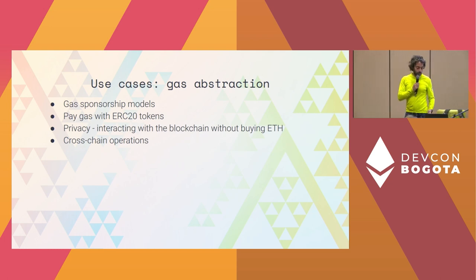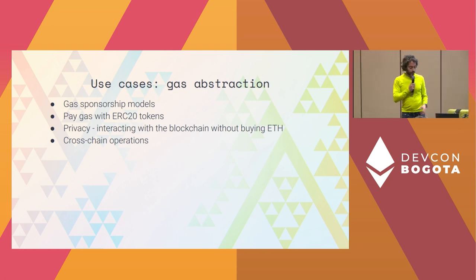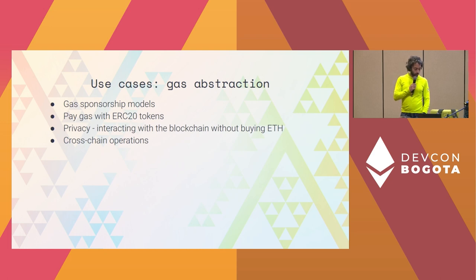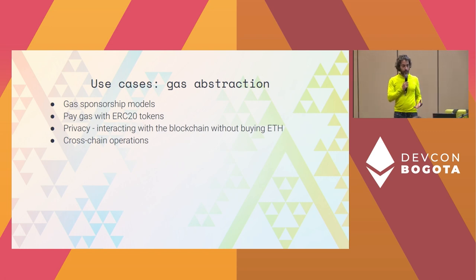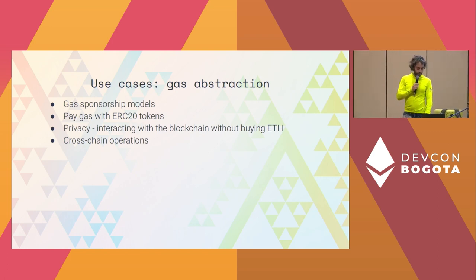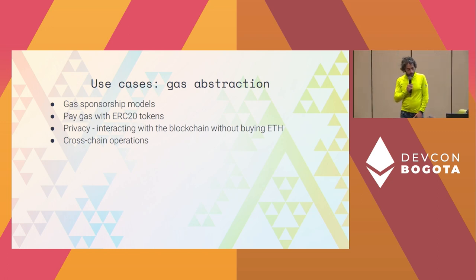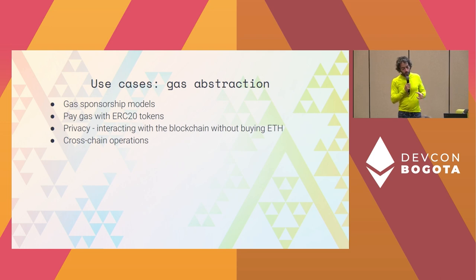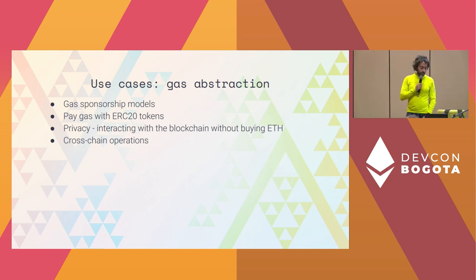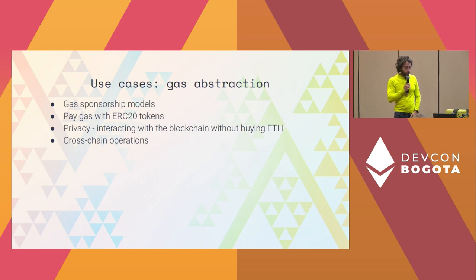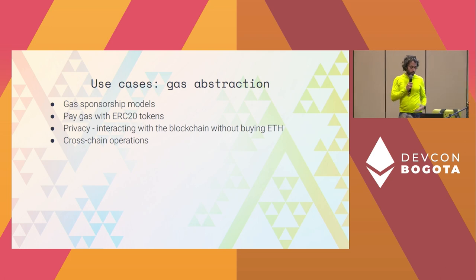Maybe you're participating in some governance and the project doesn't want you to worry about whether it's worth paying gas for the interaction — so they just subsidize it. Or you have some allotment, and if you go beyond it, you pay in that project's tokens. The nice thing about interacting with the blockchain without needing ETH is it also has privacy bonuses. If you go through the usual KYC process, someone knows who you are, and there are companies dedicated to linking all the information together. But that wouldn't be an issue if you can receive payment in any token and also pay gas in any token.